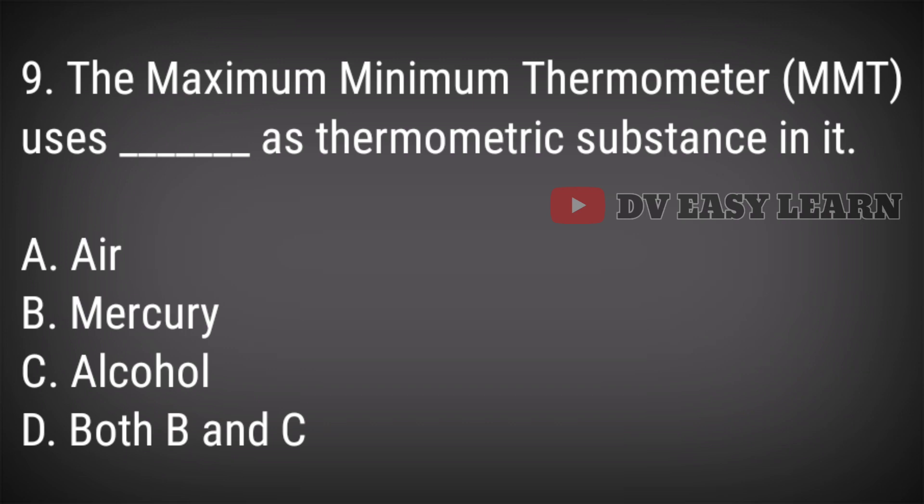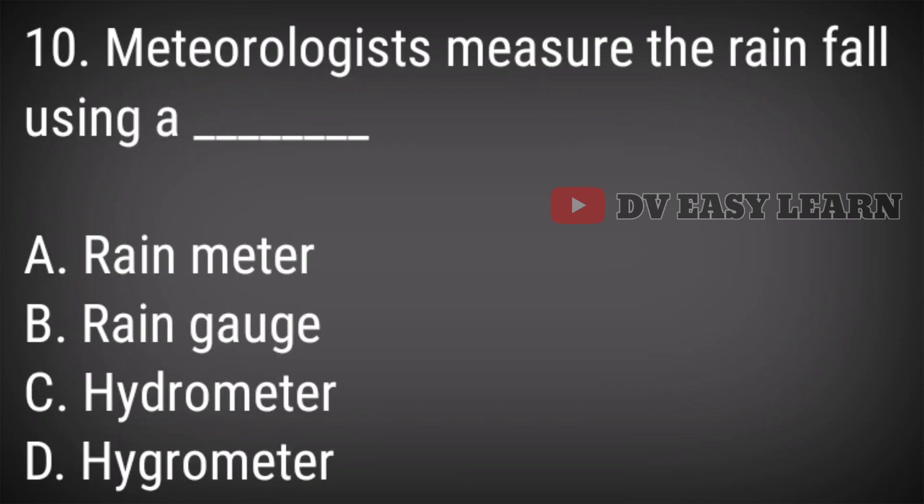Question 9: The maximum-minimum thermometer uses what as a thermometric substance in it? Answer: Mercury. Question 10: Meteorologists measure the rainfall using a? Answer: Rain gauge.